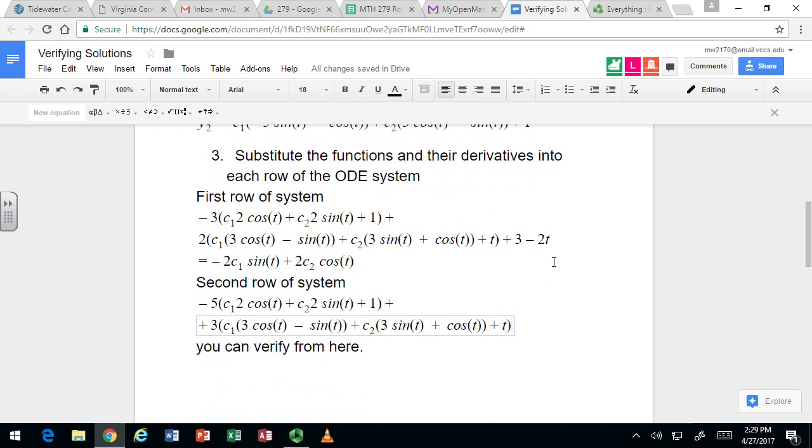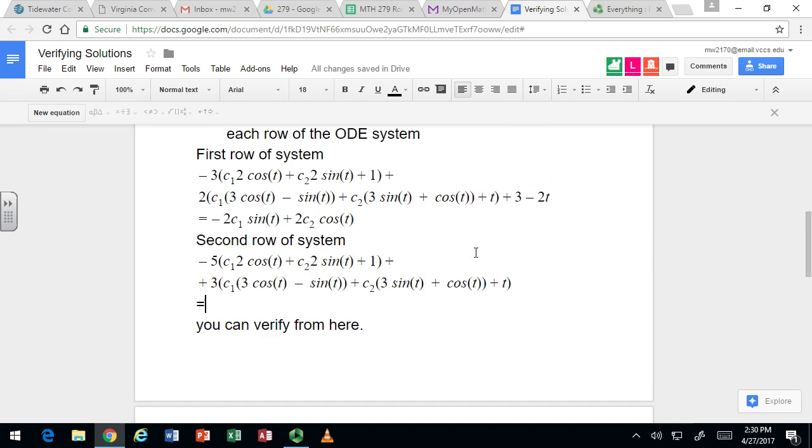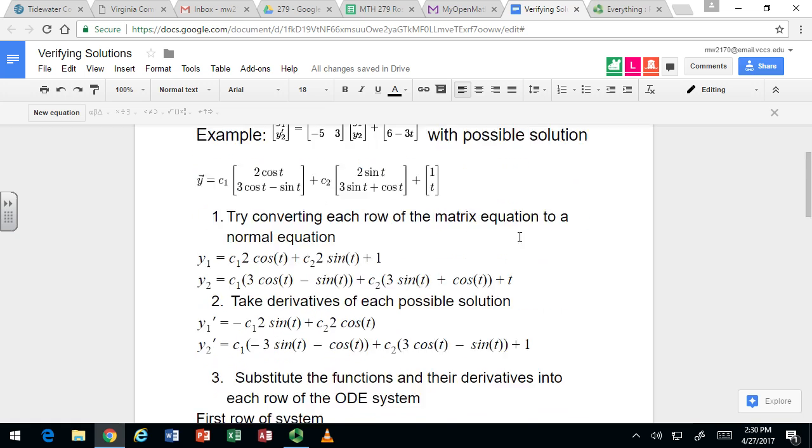Where you simplify the first row of the system, should there be a plus 3 minus 2t? No, so the plus 3 has a negative 3 times 1, so that makes that go away, and then there's a 2t that will make the negative 2t go away. All right, and then there's the 6 minus 3t for the second row.